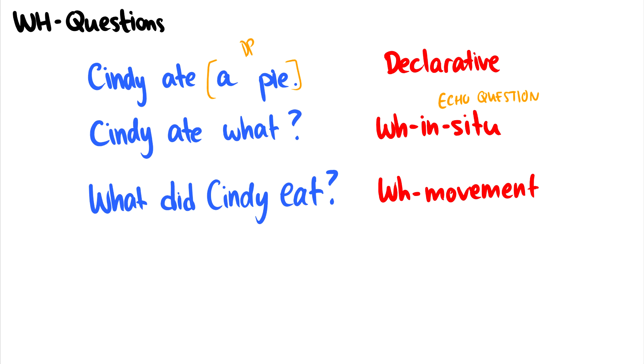The other thing I can do is form the sentence, what did Cindy eat? In this case, the object of eat is being moved up to the top of the sentence and becoming a WH word. So these are WH questions.